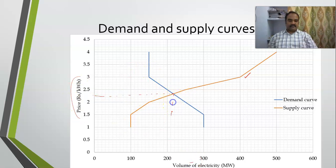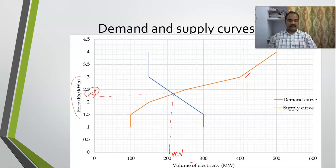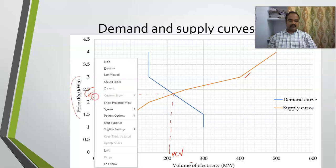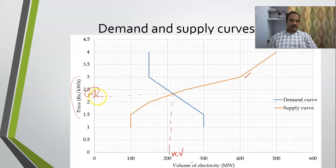The intersection of these two curves gives us the MCV (market clearing volume) and the MCP (market clearing price). The market clearing price is somewhere around 2.25 or 2.2.